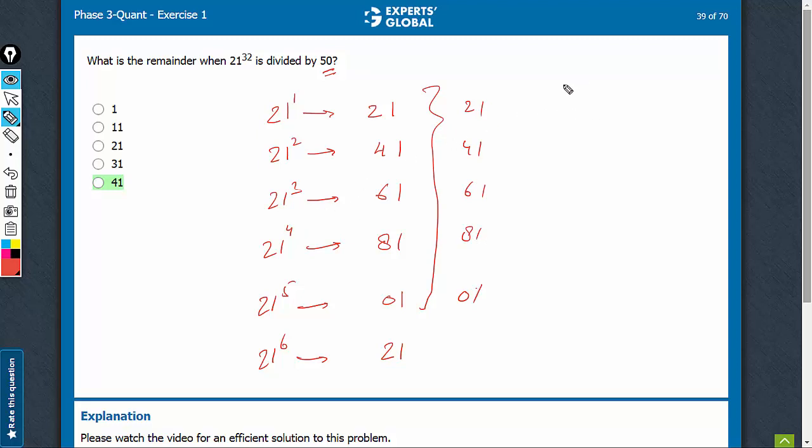So, now, 21 raised to power 32. The series 32 would lie in this range of 21 raised to power 2, 21 raised to power 7, 21 raised to power 12. All of these would have the last two digits as 41, and therefore, simply divide 41 by 50. The remainder is 41 only.